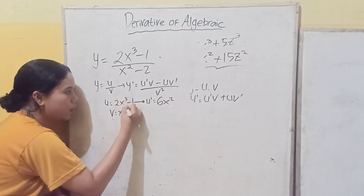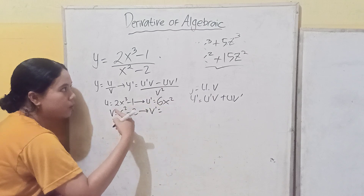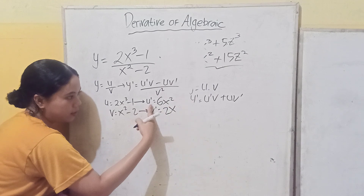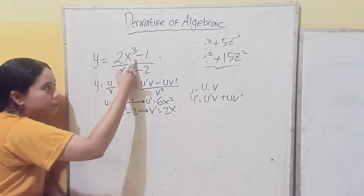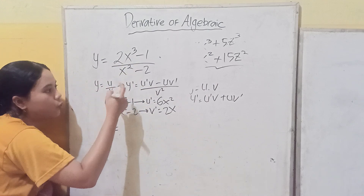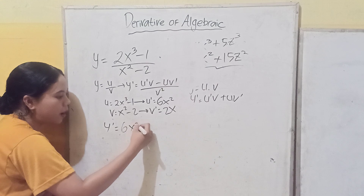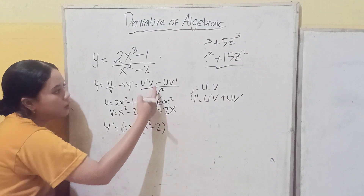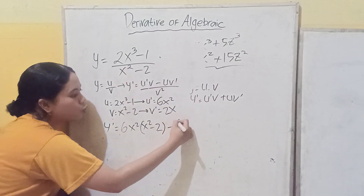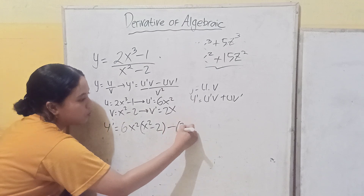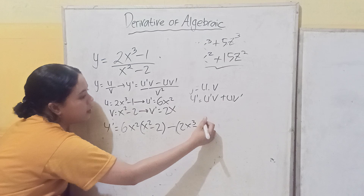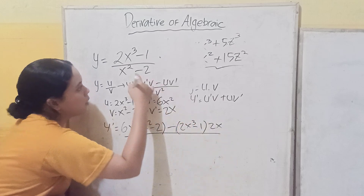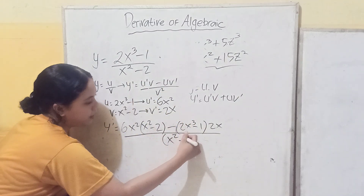Let's say the example is y equals (2x^3 minus 1) over (x^2 minus 2). So v equals x squared minus 2, and v' equals 2x, since the constant minus 2 becomes 0. Now applying the quotient rule: y' equals u'v minus uv' over v squared, which is 6x squared times (x squared minus 2) minus (2x cube minus 1) times 2x, all over (x squared minus 2) squared.